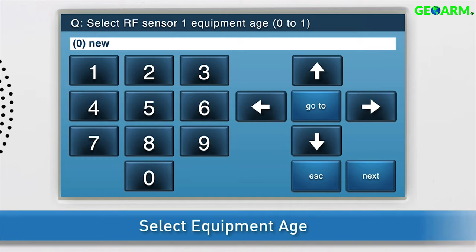Select the equipment age. Since this is a new 2GIG contact, leave the selection as 0 new. Press the down arrow to go to the next sub-question.